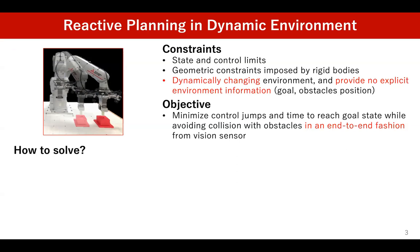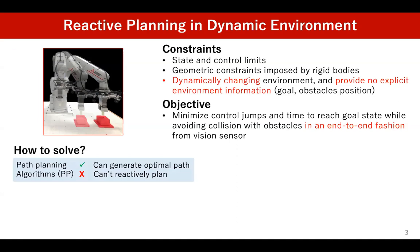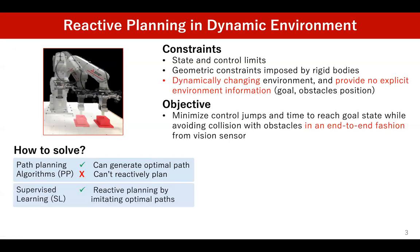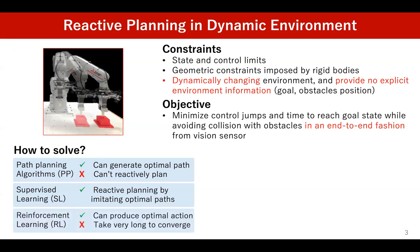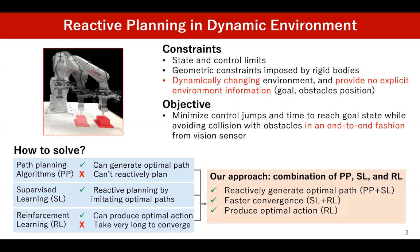How do we solve this problem? Traditionally, people have used path planning algorithms such as RRT* which can generate optimal paths. However, these methods take time to generate a path and thus cannot reactively move in dynamic environments. Supervised learning could enable us to generate a path by imitating optimal paths generated by an offline planner, but this is still a kinematic plan and does not consider robot dynamics. Recently, reinforcement learning generates optimal actions by optimizing a reward function, but it usually takes a huge number of samples to converge. In this paper, we combine these three components to learn a controller that reactively produces dynamically feasible trajectories while converging much faster than using only reinforcement learning.